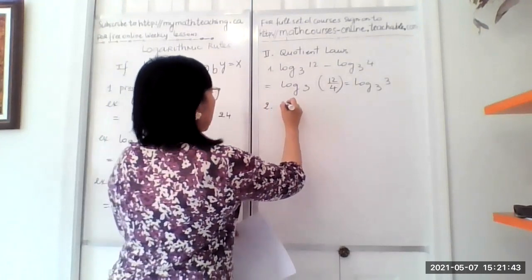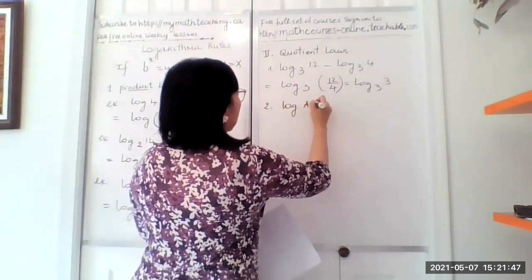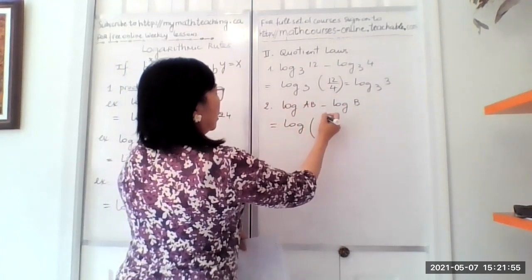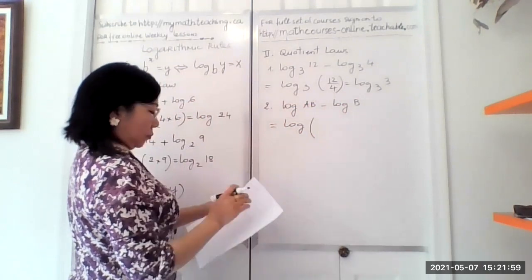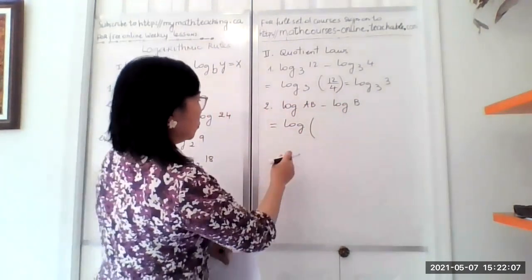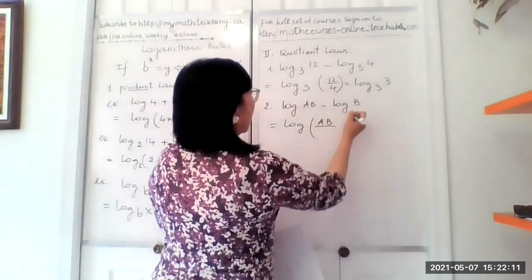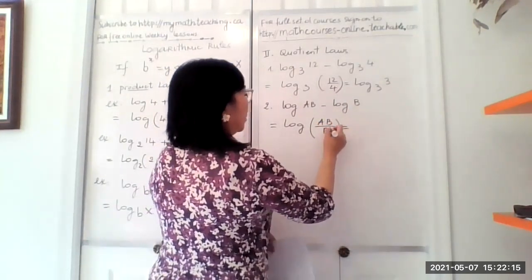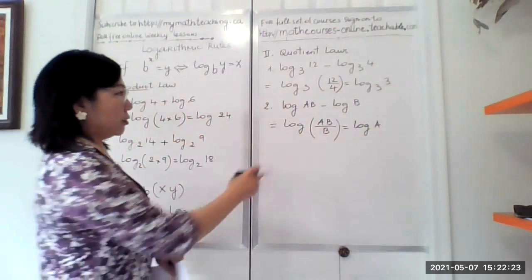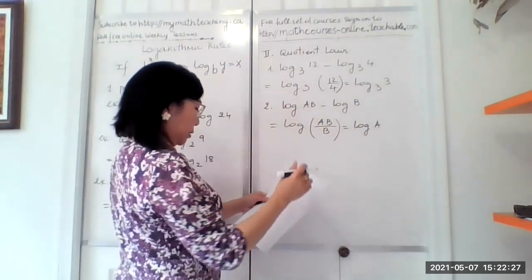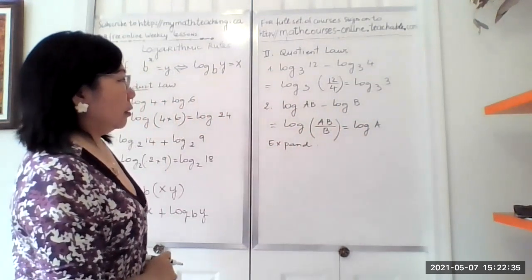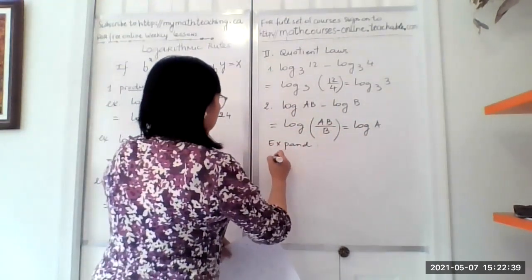Let's do another example. If you have log of AB minus log of B, you join them in one log: log of AB divided by B. The B cancels with the B in the denominator, giving you log of A only. So subtract becomes divide — that's how you do it. Now if asked to expand instead of joining into one log, you do the reverse.